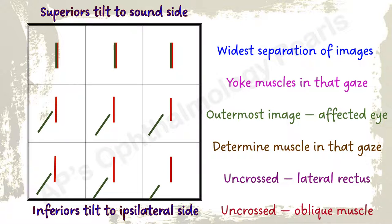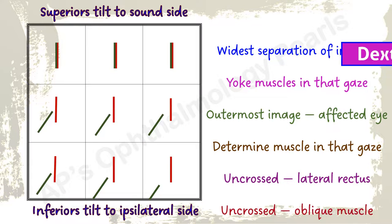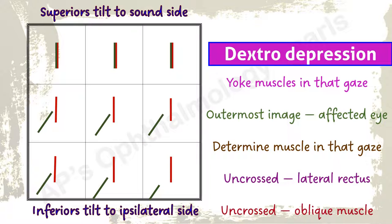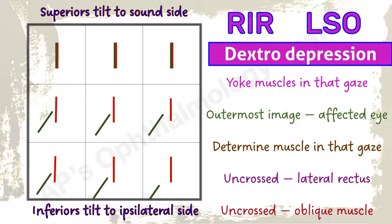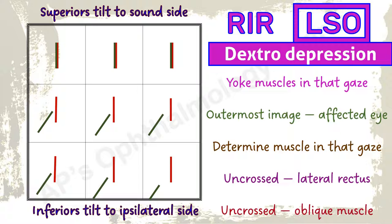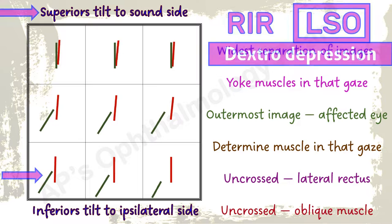Maximum separation of images is in dextro depression. The yoke muscles acting in dextro depression are the right inferior rectus and the left superior oblique. Green is the outermost image, so the left eye is involved — this is a left superior oblique palsy. This is an uncrossed diplopia, so the oblique checks out. The tilt is towards the sound right side, so superior checks out.